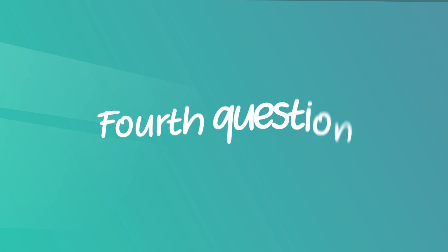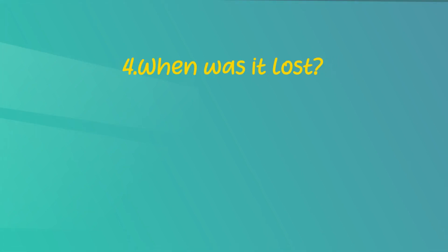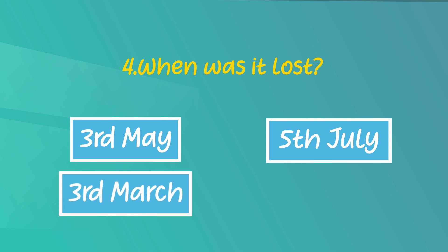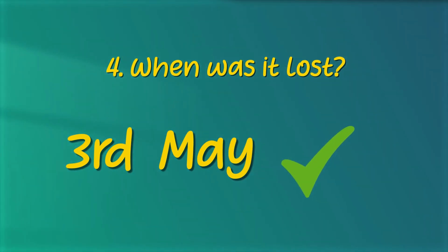Fourth question: When was it lost? You have four dates as options — 3rd May, 5th July, 3rd March, and 5th May. Refer to the notice. Yes, the dog was lost on 3rd May. You are correct.